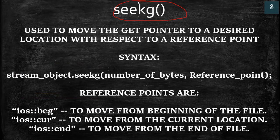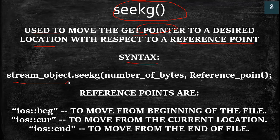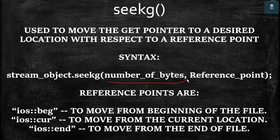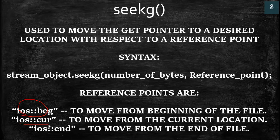The seekg function is used to move the get pointer to a desired location with respect to a reference point. The syntax is: write the stream object, then a dot, then the seekg keyword, and inside the brackets write the number of bytes and the reference point. We have three reference points: ios::beg moves the pointer with respect to the beginning of the file, ios::cur moves it with respect to the current location, and ios::end moves it with respect to the end of the file.